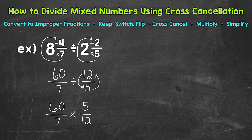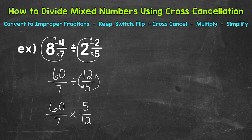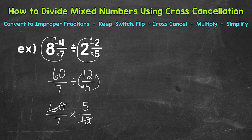Now we can multiply straight across, but in this problem we have an opportunity for cross cancellation. Cross cancellation is a way to simplify fractions before multiplying — it gives us smaller and easier numbers to work with, therefore a simpler problem to solve. We cross cancel by looking for common factors between the numerators and denominators. We have common factors other than 1 between 60 and 12, with a greatest common factor of 12. So let's divide 60 and 12 by 12 by crossing them out. 60 divided by 12 is 5, and 12 divided by 12 is 1.